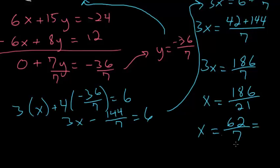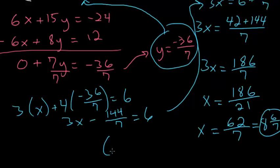But we can also turn this into a mixed number. 7 goes into 62 eight times and there are 6 leftovers, so 8 and 6 sevenths would be our x value. Combining our x and our y values, we know that the coordinate at which the two lines intersect is at 8 and 6 sevenths and negative...